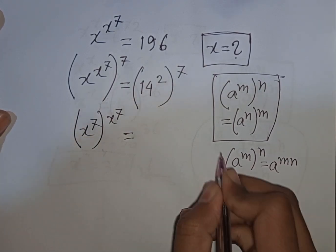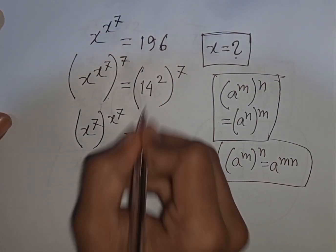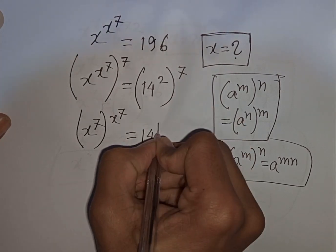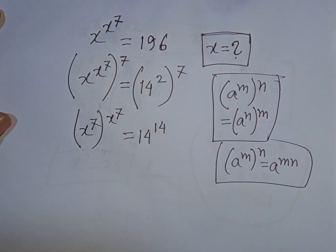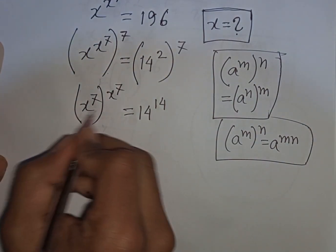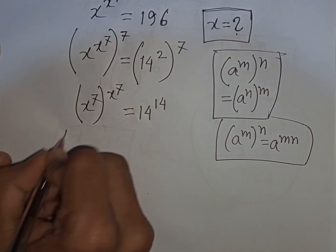That means it will be 14^14. Now from here we see x^7, x^7 - both terms are the same.